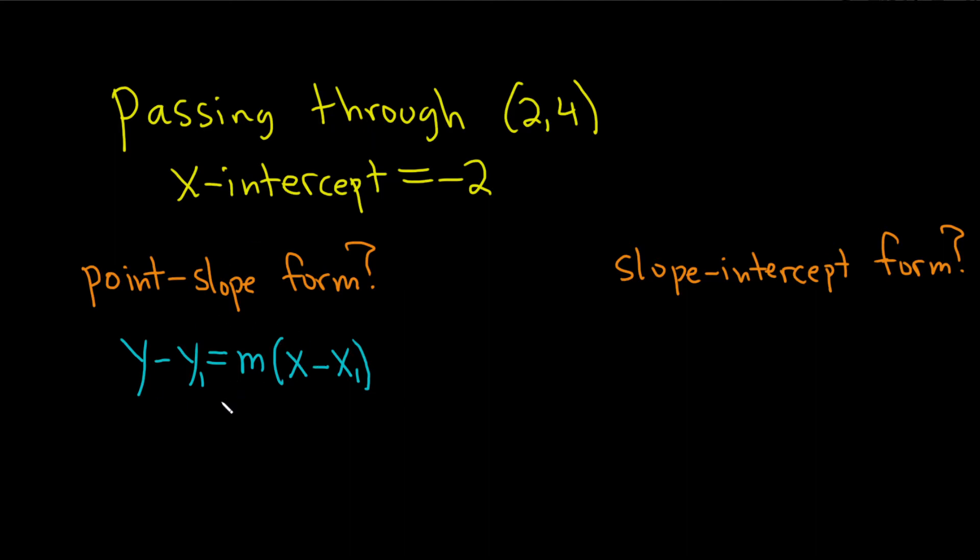Okay, so now we just have to plug everything in. So the x₁ and the y₁, that's a point. It looks like they give us that in the problem, so x₁, y₁. Then we need to find the slope, which is m. But they don't give us that. They give us the x-intercept. So we need to find m.